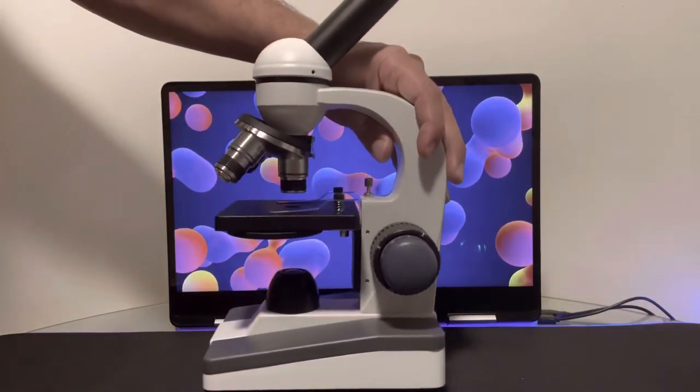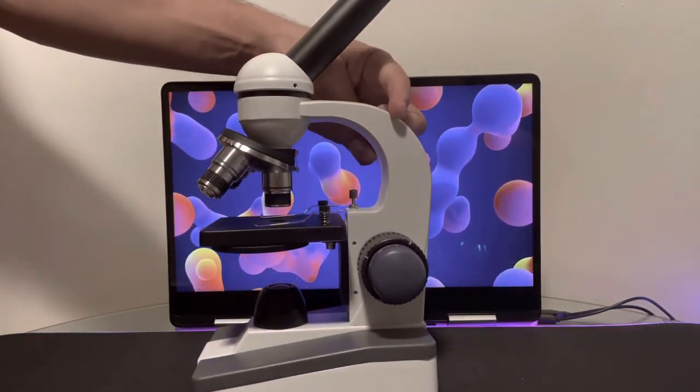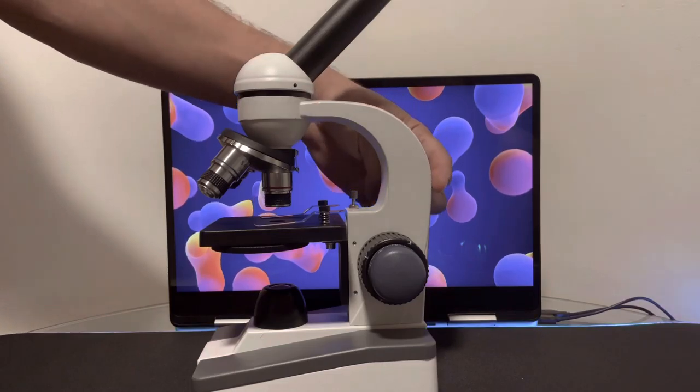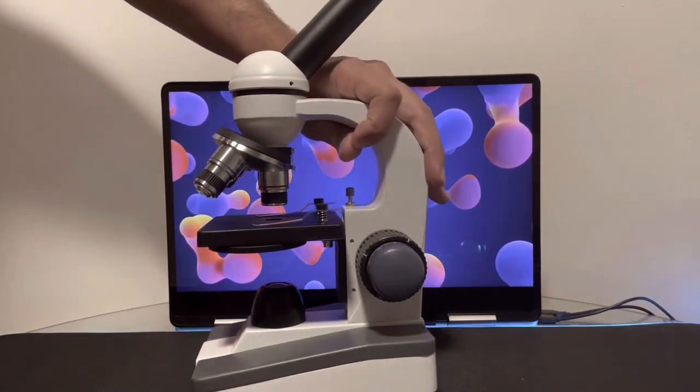Now, here to the side, we have the arm of the compound microscope. This is where you can grab it and switch it around, move it around, pick it up, and whatnot.